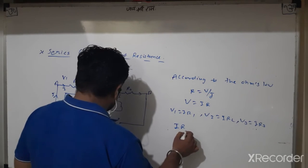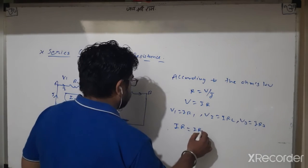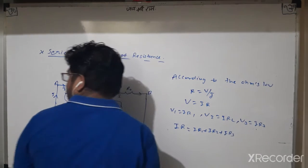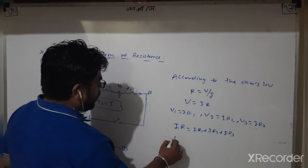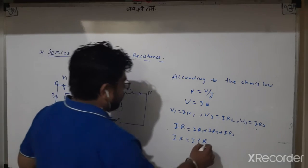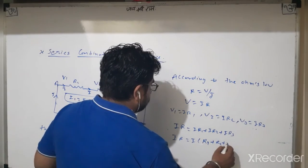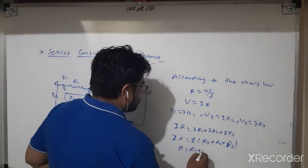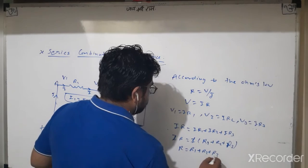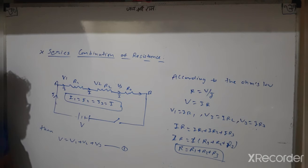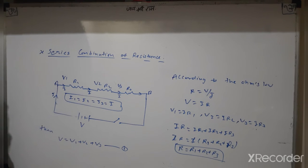Substituting into equation 1: IR = IR1 + IR2 + IR3. I is common and cancels, giving us R = R1 + R2 + R3. This is the formula for the series combination of resistance.